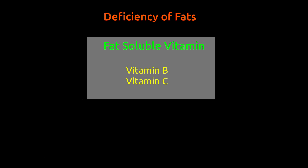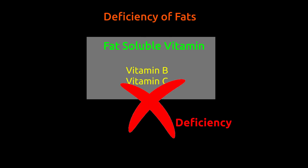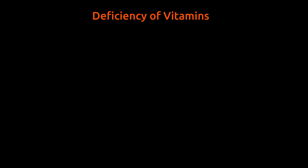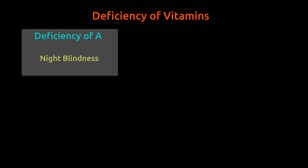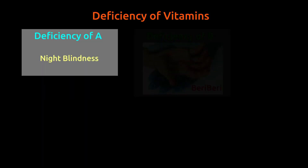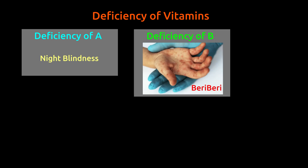Deficiency of fat leads to less absorption of fat-soluble vitamins and becomes a cause of various vitamin deficiency diseases. Vitamins A deficiency leads to night blindness. Deficiency of vitamin B leads to a disease called beriberi, in which the person becomes fatigued and there is weakening of the nervous system.